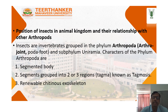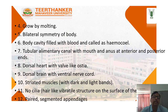Insects are invertebrates, grouped in the phylum Arthropoda. Arthu means joint and podus means foot. Sub-phylum Uniramia. Characters of phylum Arthropoda are: segmented body, segments grouped into 2 or 3 regions, known as Tagmosis. Exoskeleton, growth by molting, bilateral symmetry of body.